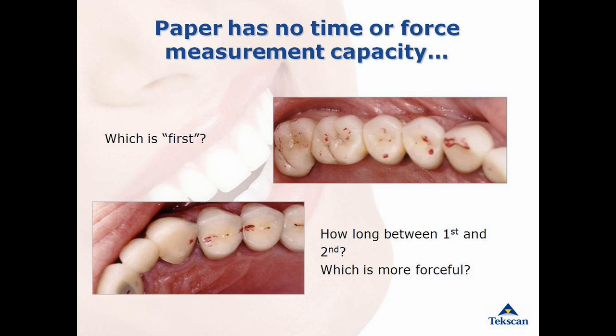By simply looking at the articulating paper marks, how do you know which contact hits first? What hits second? What was the time differential between the first and second point of contact? Which is more forceful? Is this light scratchy mark an area of low force or high force?